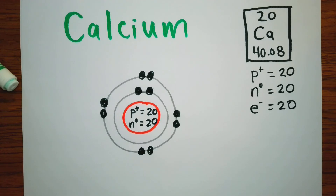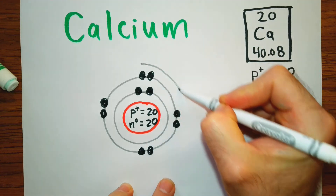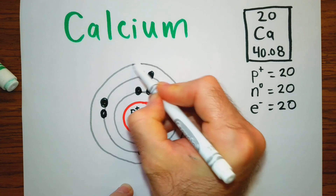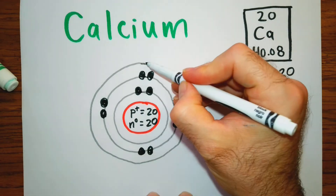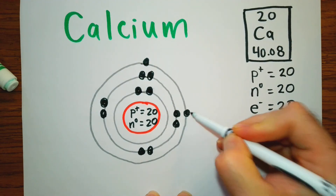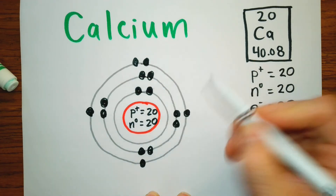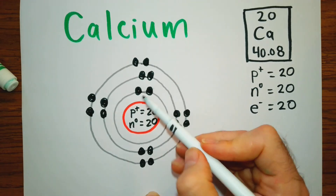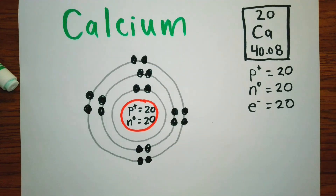We have ten electrons left and still need to do ten more, so we need another orbital. The third orbital can have a total of eight electrons. We need ten more so we put all eight here: one through eight. That gives us two plus eight plus eight equals eighteen, and we need twenty, so we have two more electrons to place in the fourth orbital.